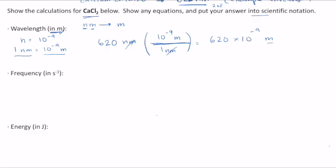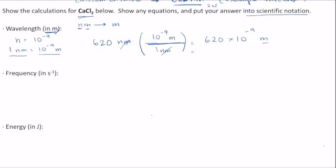Now we want to put this into scientific notation. We move the decimal to get 6.2, and notice that this was two sig figs so I'm keeping this answer with two sig figs — not adding a zero to the end. If I added a zero it would be three sig figs because of the decimal. This number is getting smaller, so the exponent needs to get bigger, but in the negative exponents getting bigger means closer to zero. So that's 6.2 times 10 to the minus 7 meters in scientific notation.